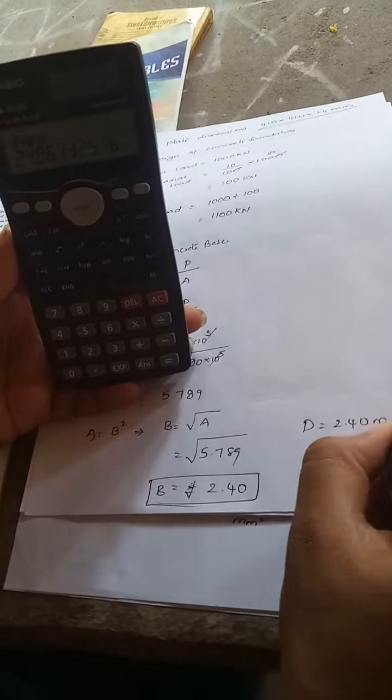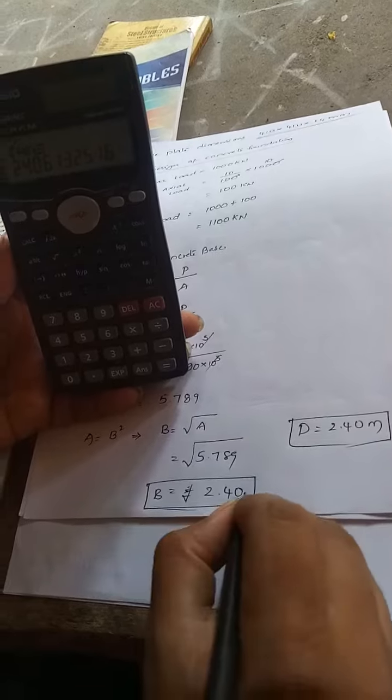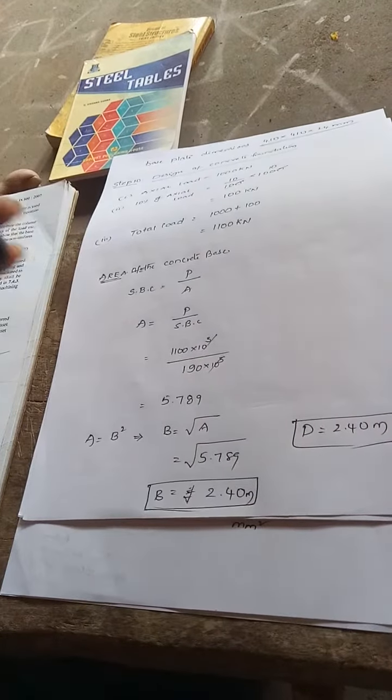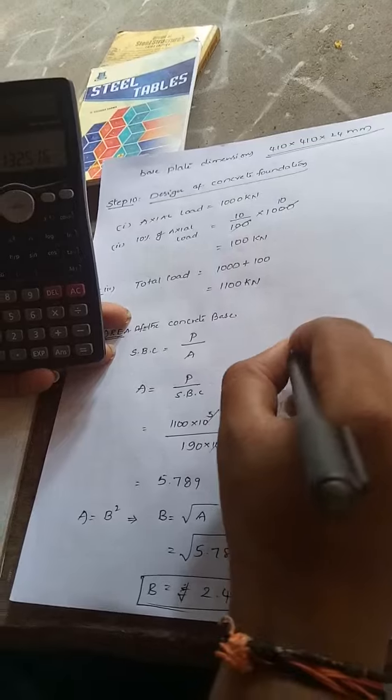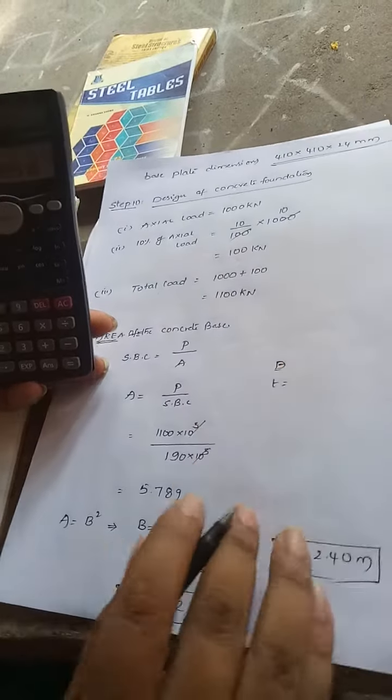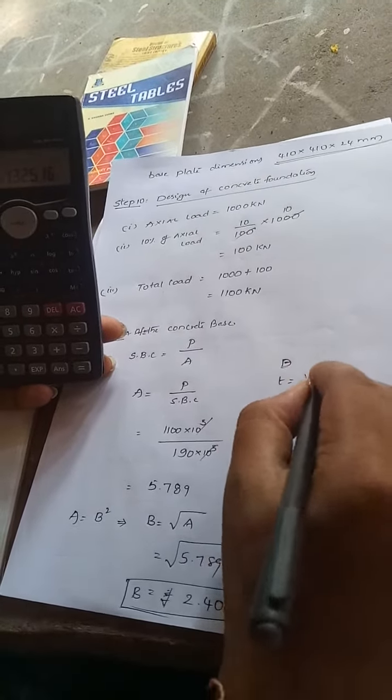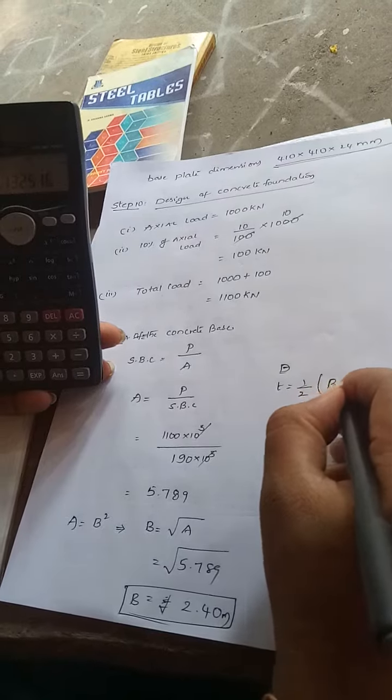also the same value. So from D we can find out the thickness. Thickness formula: half into B minus small b.